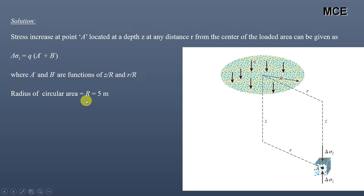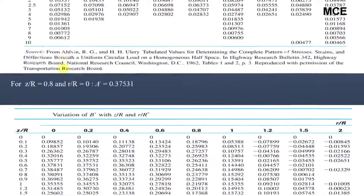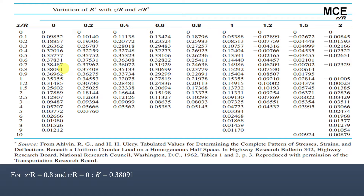The radius of our circular area is 5 meters and the depth is 4 meters. For the first radial distance r equals 0 meters: Z/R equals 4/5 equals 0.8, and r/R equals 0. From Alvin's table, for Z/R equals 0.8 and r/R equals 0, the value of A prime is 0.37531, and the value of B prime is 0.38091.